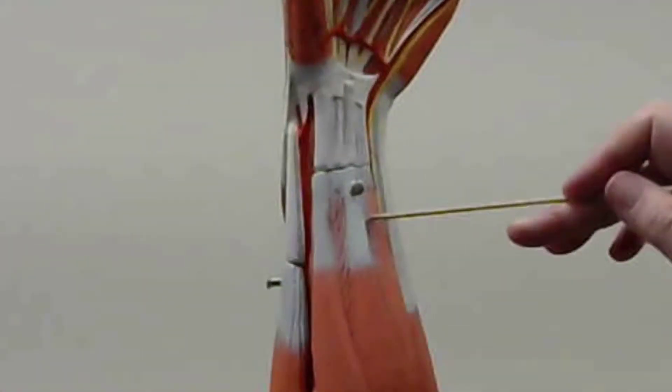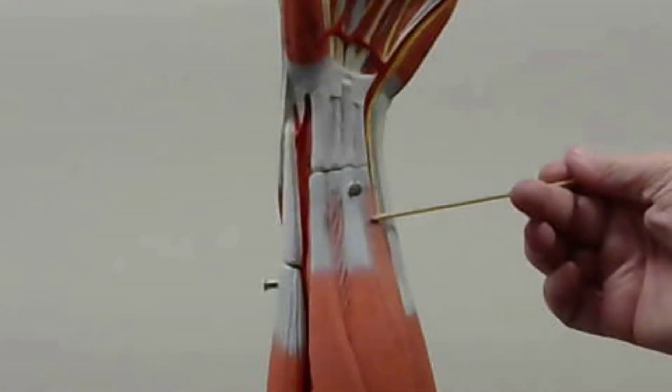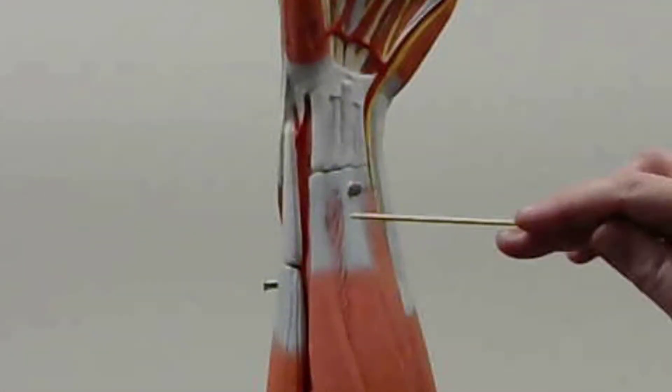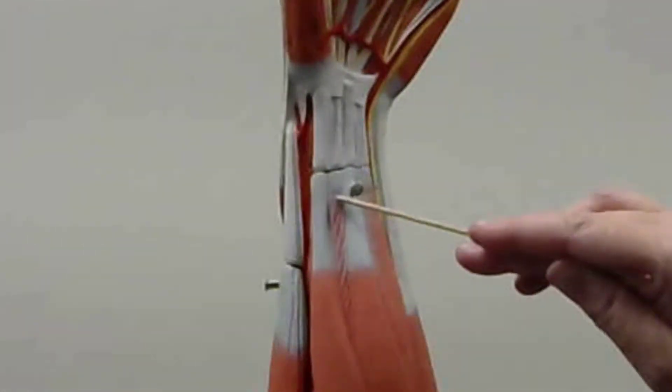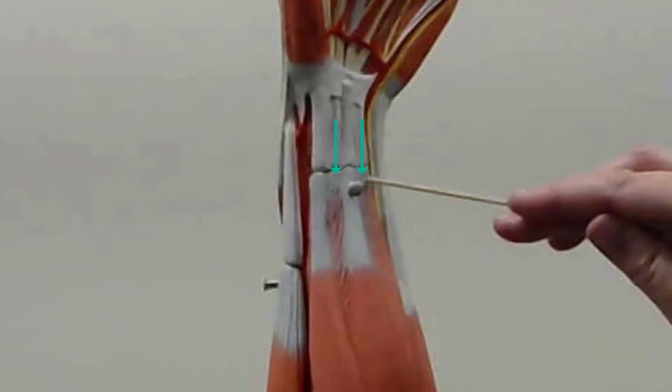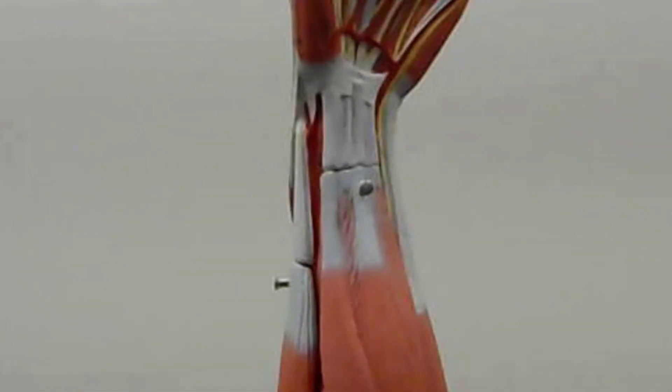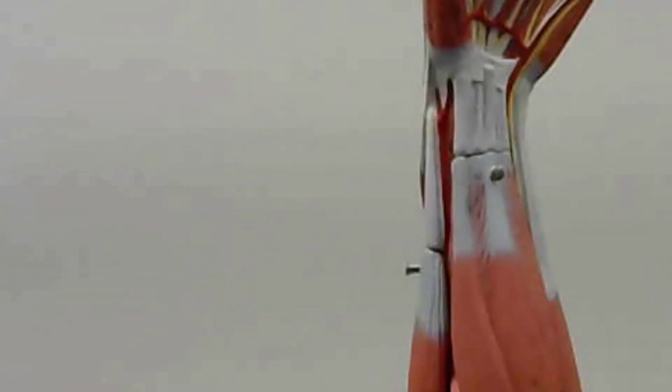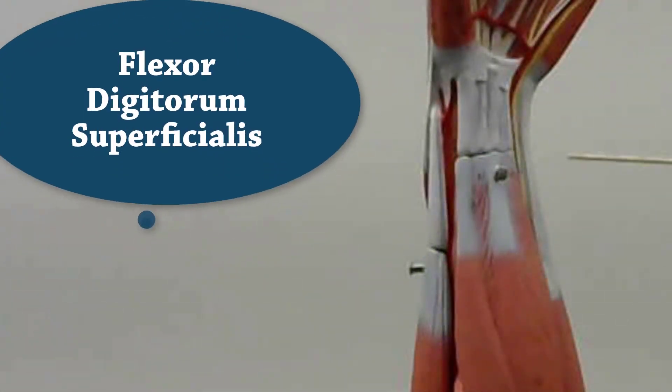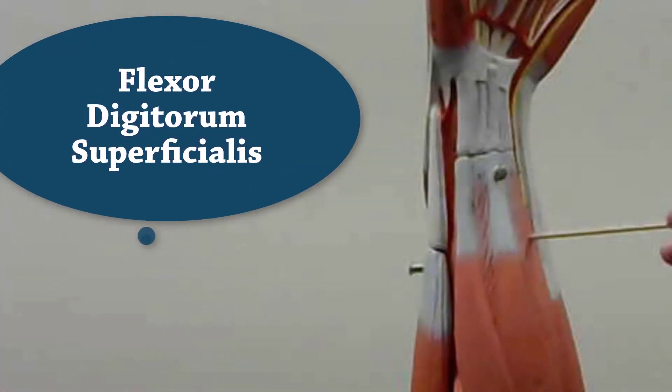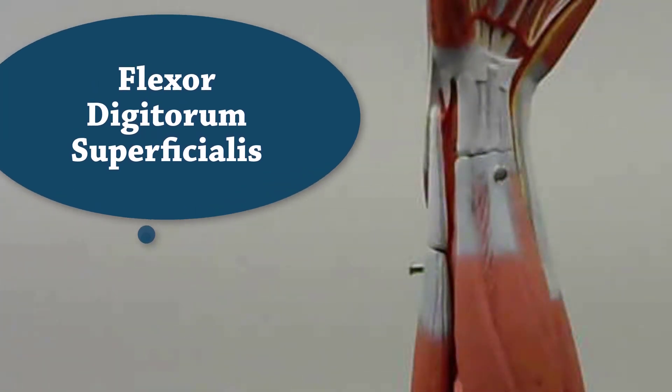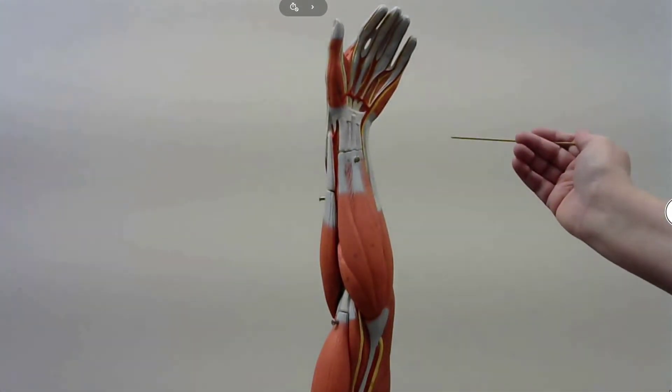You have these muscles that lie underneath these tendons here, so you can see it here and here. These are called flexor digitorum superficialis—digitorum because these are the digits. So when you flex your fingers, you'll actually feel it in that area.